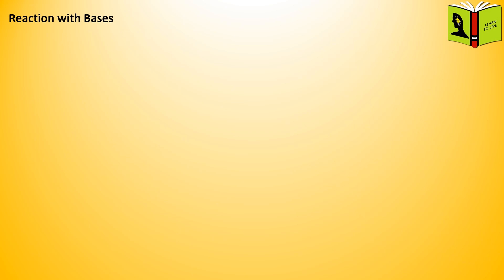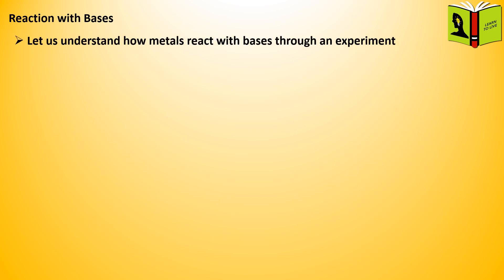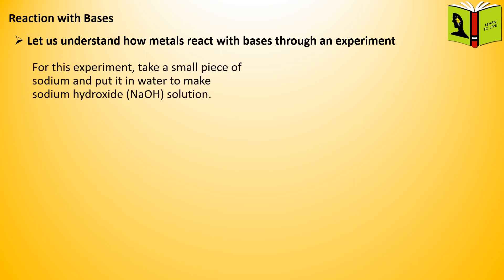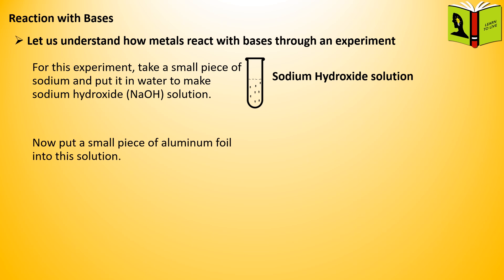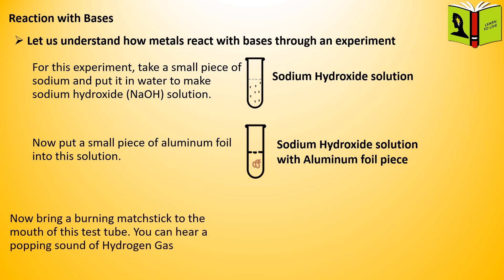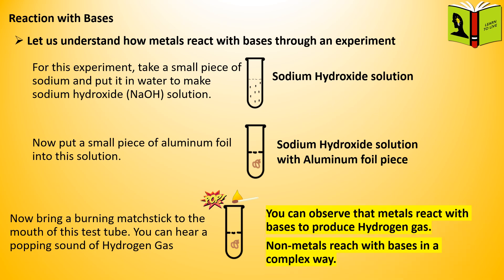Reaction with bases. Let us understand how metals react with bases through an experiment. Take a small piece of sodium and put it in water to make sodium hydroxide solution. Now put a small piece of aluminum foil into this solution. Bring a burning matchstick to the mouth of this test tube — you can hear a popping sound of hydrogen gas. You can observe that metals react with bases to produce hydrogen gas. Non-metals react with bases in a complex way.